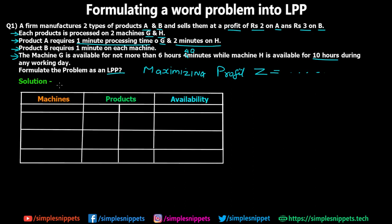The table has three columns: the first column is for machines, the second for products A and B, and the third for availability of the machines. The machines we have are G and H. The availability of machine G is 6 hours and 40 minutes — converting to minutes, that is 400 minutes. Machine H is available for 600 minutes, which is 10 hours.